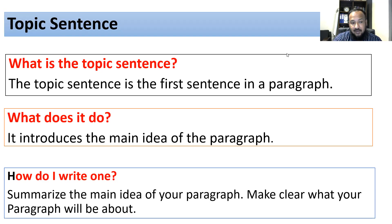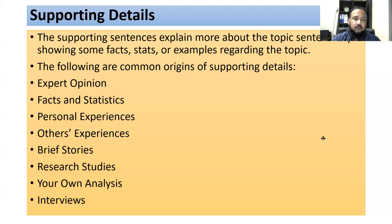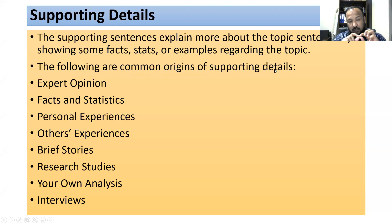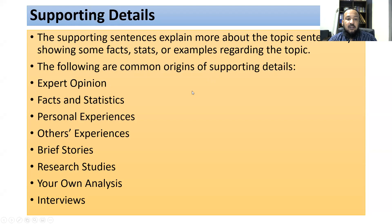There are three questions about the topic sentence. The supporting sentence explains more about the topic sentence by showing some facts and details. The following are the common origins of supporting details: expert opinions, facts and statistics, personal experiences, others' experiences, brief stories, research studies, your own analyses and interviews, and many other things.